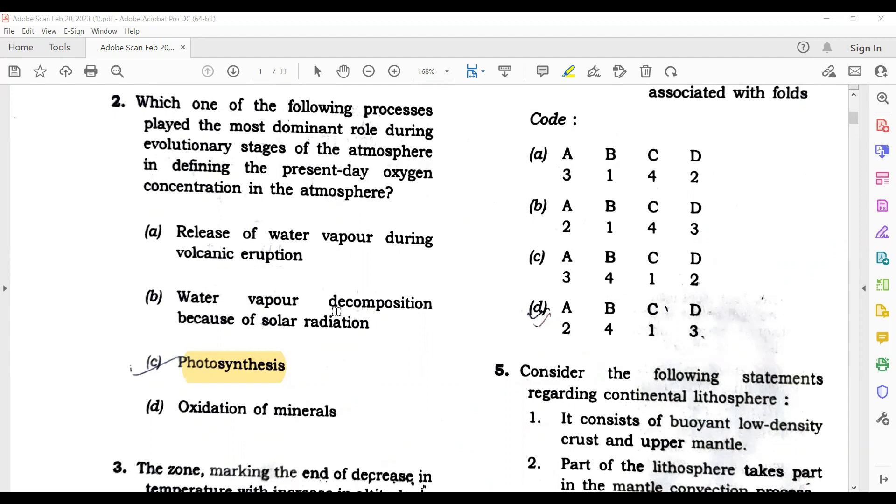If I have to choose the answer, I will go with photosynthesis. But during the second stage of the evolution of the atmosphere, water vapors in the form of steam got accumulated. So it was our second major atmosphere.